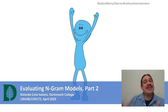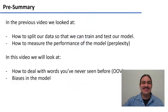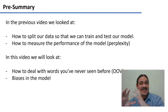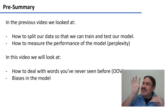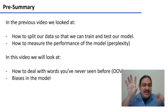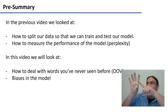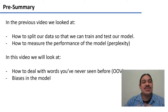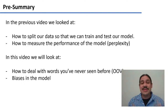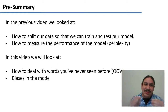Let's continue evaluating n-gram models. In the last video we looked at how we can separate our data into training and testing sets and how we can determine the performance of our n-gram models by calculating the perplexity of our testing set. We would use the probabilities calculated with our training set to determine how perplexed the system was when it saw the sentences in the testing set. In this video we will continue our evaluation of n-gram models, looking at how we can deal with words we've never seen before — out-of-vocabulary words — and some sources of biases that can creep into our model.